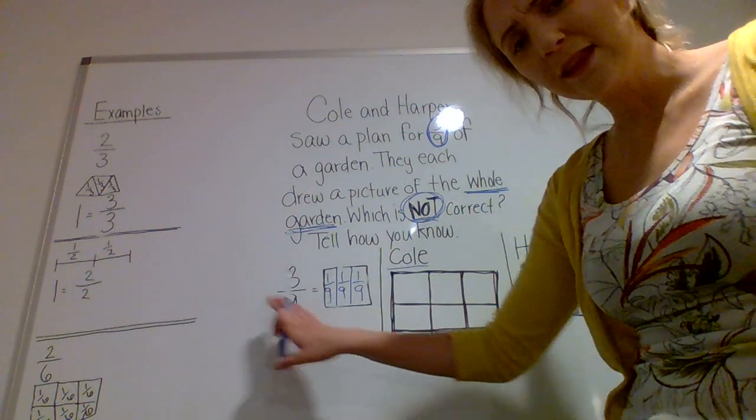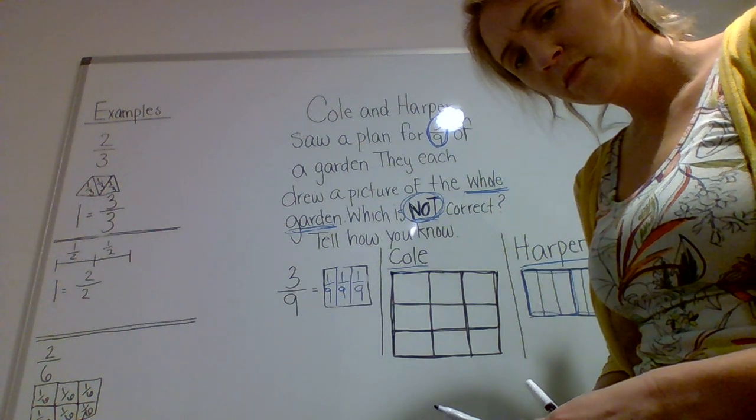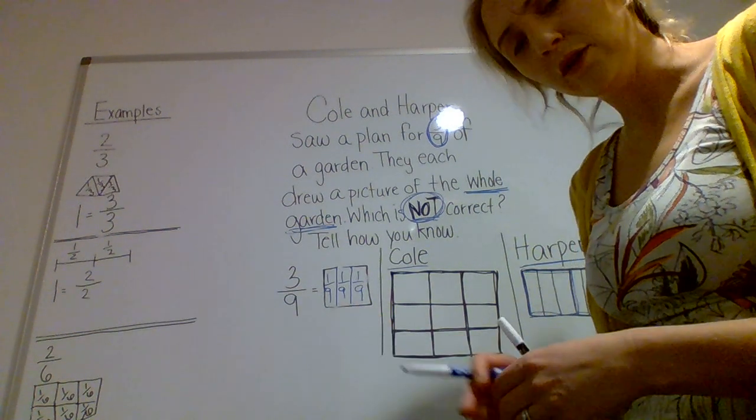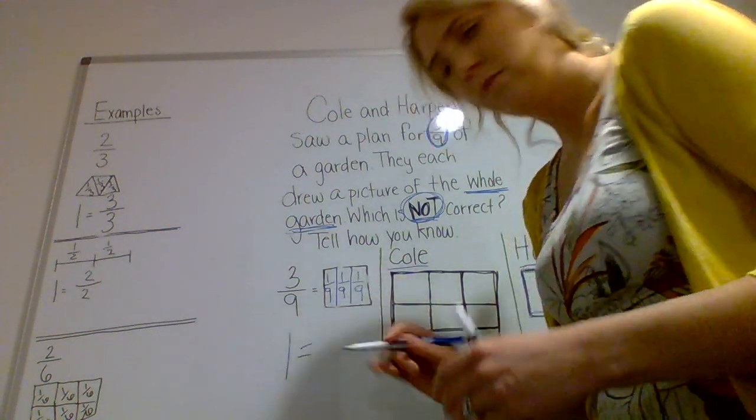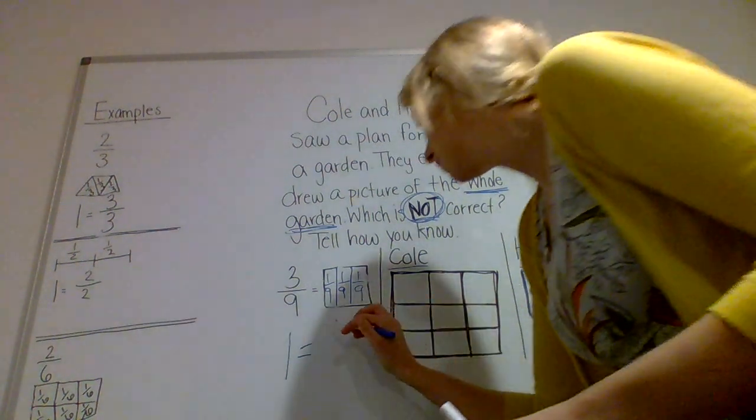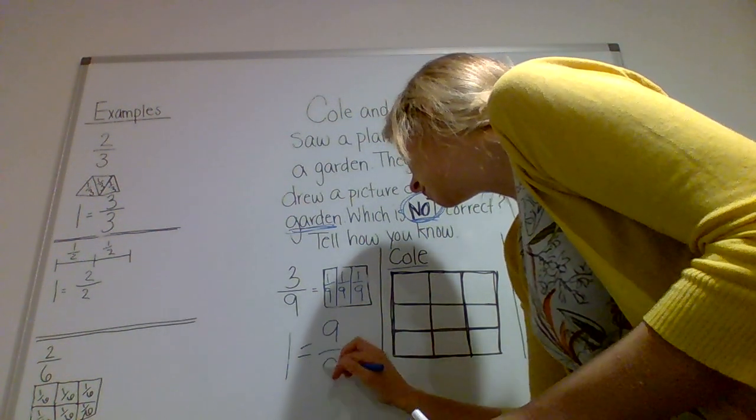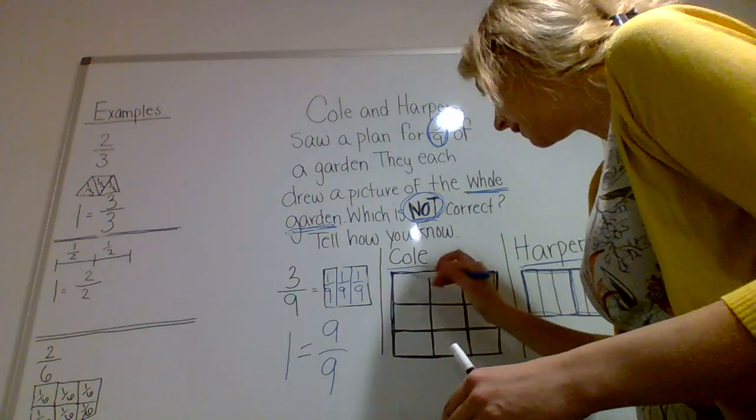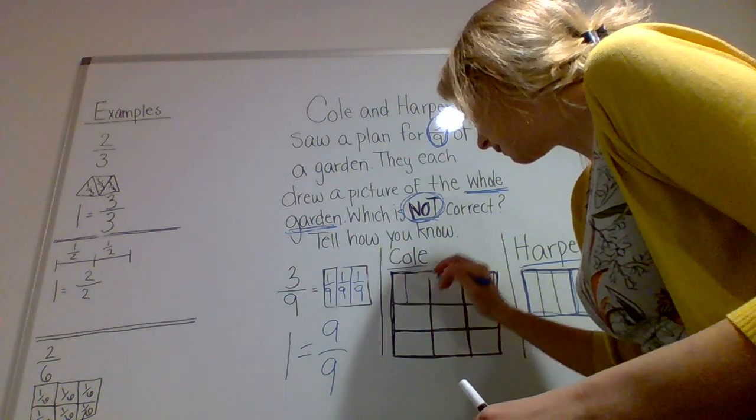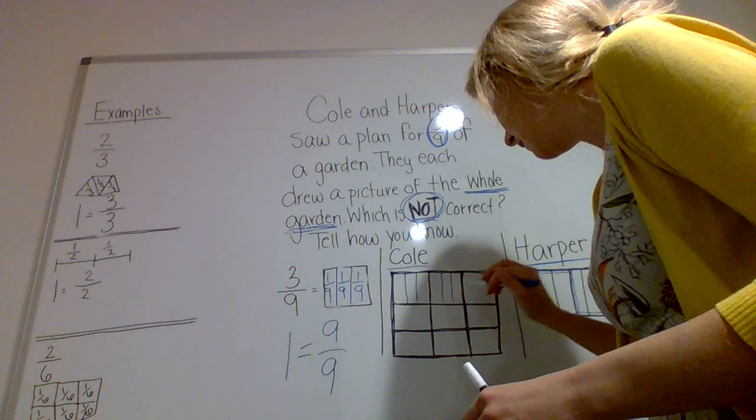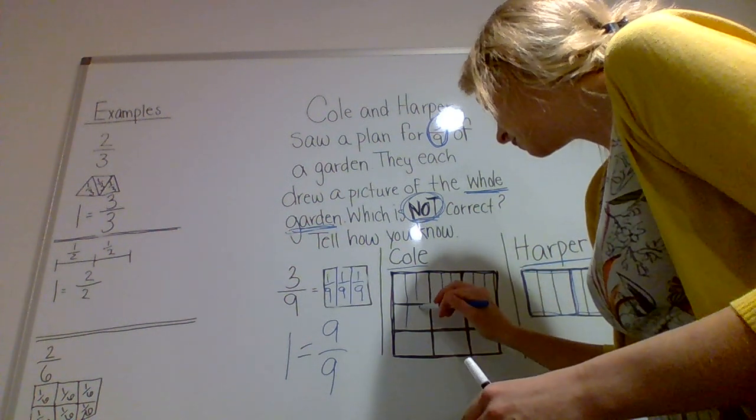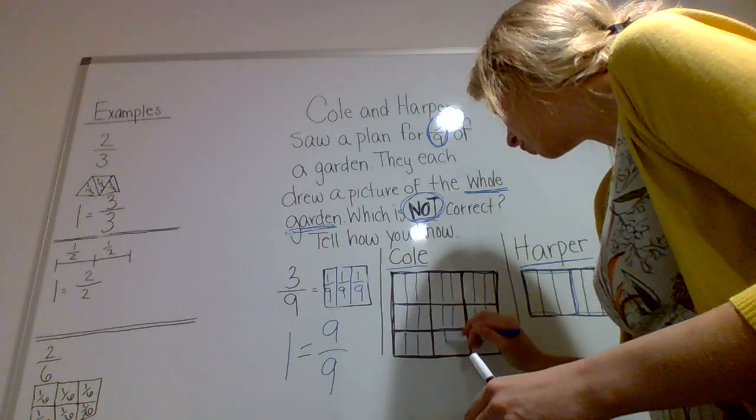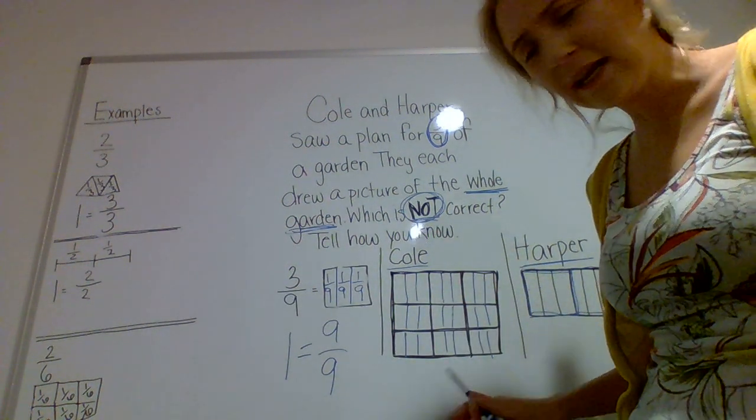Now take a look at what Cole did. I notice Cole took the whole squares just like this, and he went one, two, three, four, five, six, seven, eight, nine. So that's what Cole did. And I notice Harper took only one, two, three. She only took three of the squares. So Cole took nine of the squares, while Harper only took three of these squares. So who is correct here? Let's think about it. So let's say Cole, he took one of these squares and he partitioned—remember, you've got to partition each one into three-ninths.